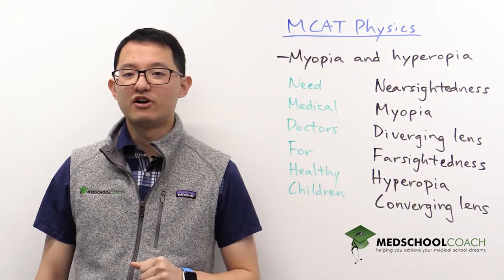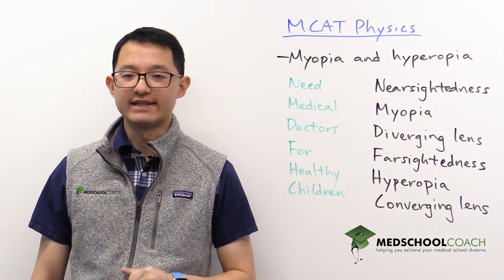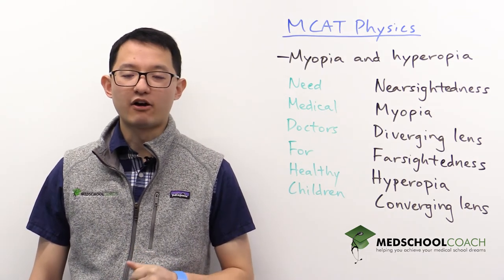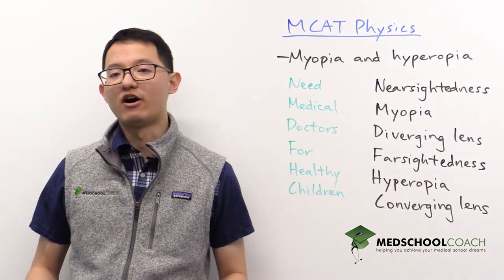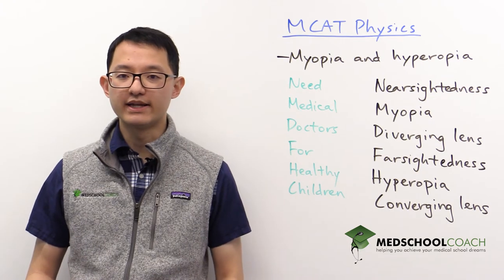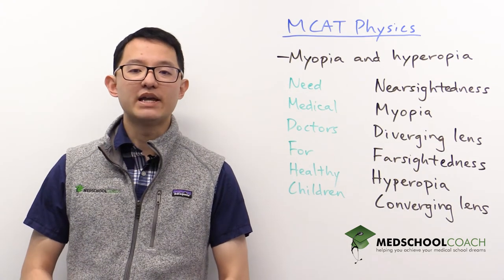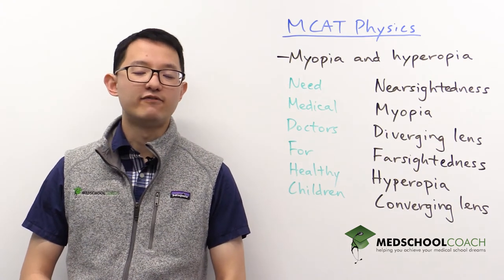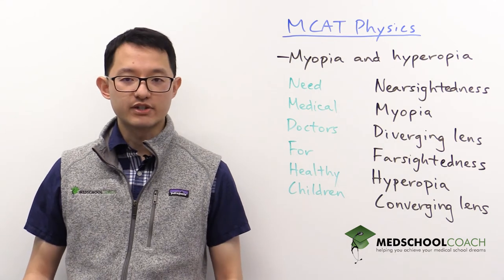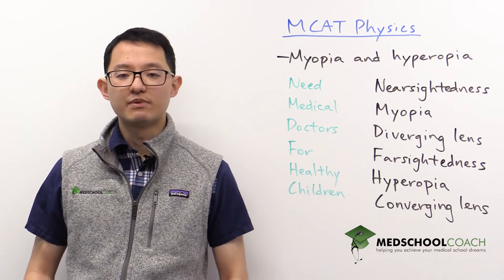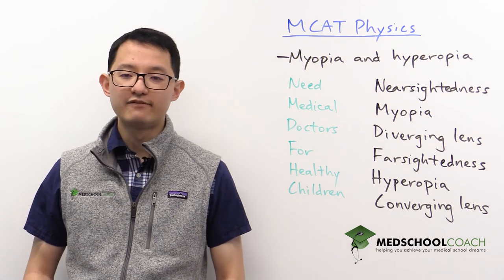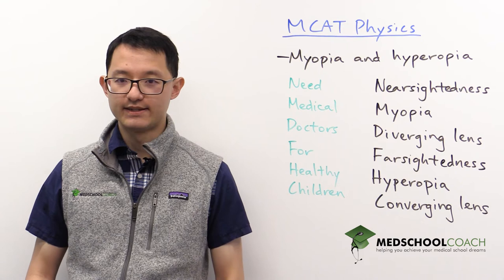Myopia is also called nearsightedness. People with myopia are able to see objects close to them clearly but they aren't able to see far away objects. To correct their vision, individuals with myopia need to wear diverging lenses.